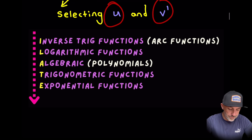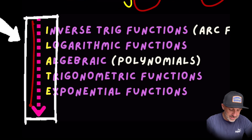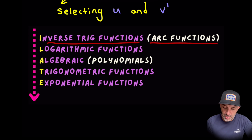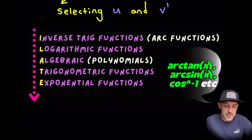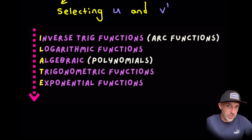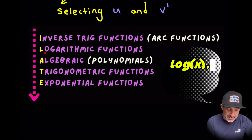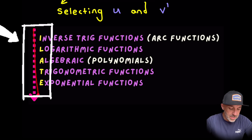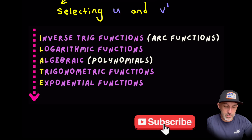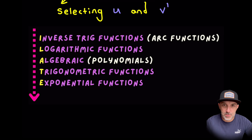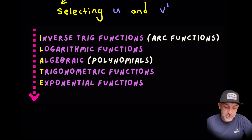There's a little acronym, ILATE, that we'll follow. If we see an inverse trig function such as arctan, arccos or arcsine, we will call that u — that's the same as sine to the minus one, cosine to the minus one, or tangent to the minus one. If we see a logarithmic function, we'll call that u. We go down this list and the first time we see one of these things, we call that u. Next would be algebraic expressions such as polynomials like x squared or x cubed, then trig functions, then exponential functions last.